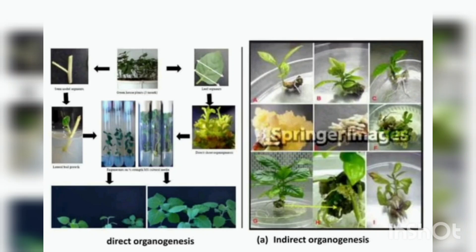The difference between direct and indirect organogenesis: in direct organogenesis we can develop organs directly from an explant, whereas in indirect organogenesis development of callus takes place first. In indirect organogenesis, callus tissue is formed, whereas in direct organogenesis there is no involvement of callus tissue — the shoot or root comes directly from the explant.